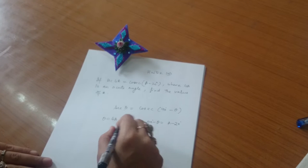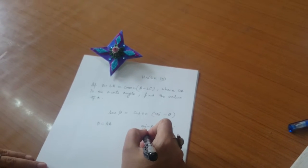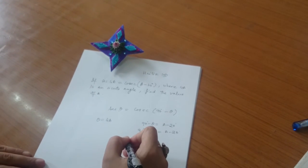If we put the value of theta, 4a, in the equation 90 minus theta equals a minus 20, we get 90 minus 4a is equal to a minus 20 degrees.